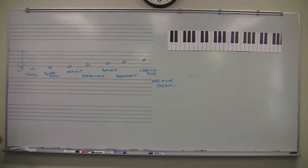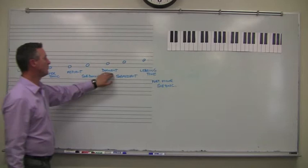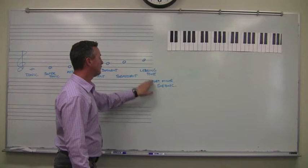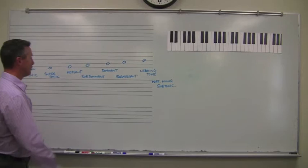Now, these are just labels, alright? So don't get confused by this. They may seem a little bit confusing to start with, but we've got tonic, supertonic, mediant, subdominant, dominant, submediant, leading tone. And in natural minor, that leading tone is called the subtonic.